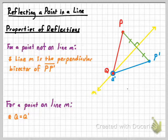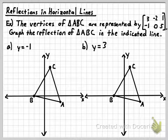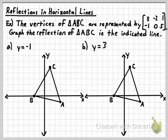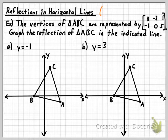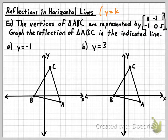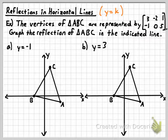Now we're going to focus on coordinate plane problems. In this video we'll do reflections in horizontal lines and vertical lines. In the next video we'll learn reflections in special lines — specifically the axes and the lines Y equals X and Y equals negative X. The equation of a horizontal line always comes in the form Y equals K, where K is any constant value. We have two lines of reflection here: Y equals negative 1 and Y equals 3.